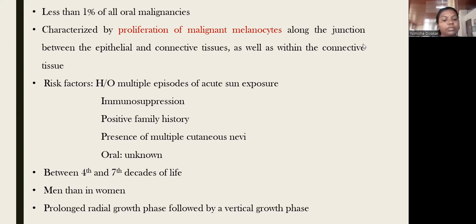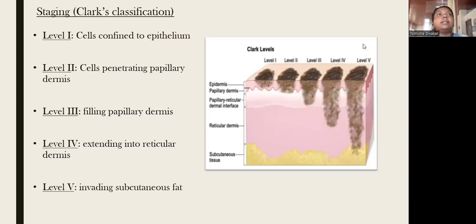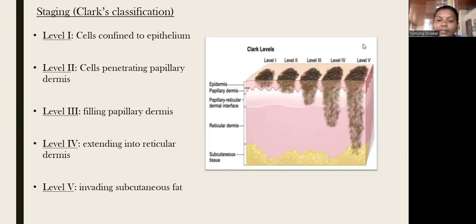It is commonly seen between the 4th and 7th decades of life and more commonly in men than in women. It has a prolonged radial growth phase followed by a vertical growth phase — it enlarges horizontally first, then enlarges vertically downwards. The staging of malignant melanoma is known as Clark's classification, which has 5 levels. Level 1: malignant melanocytes confined to the epithelium/epidermis. Level 2: cells penetrating into the papillary dermis. Level 3: cells filling the papillary dermis. Level 4: extends into the reticular dermis. Level 5: invades the subcutaneous tissue.